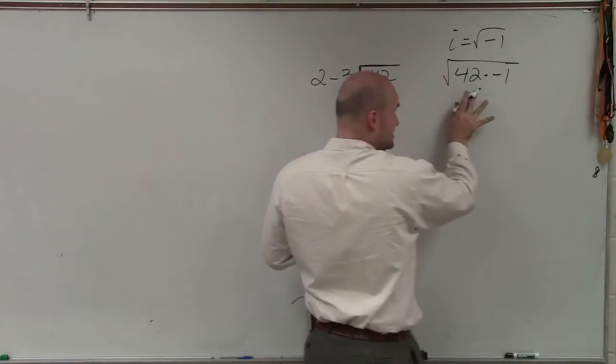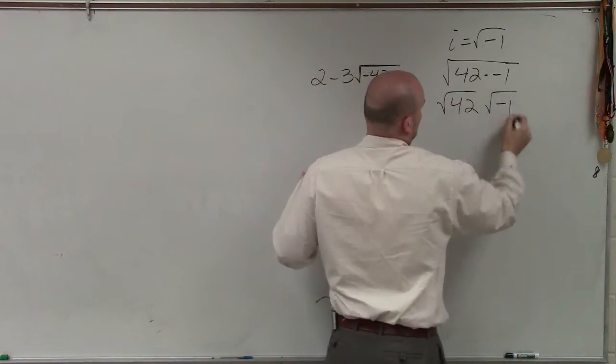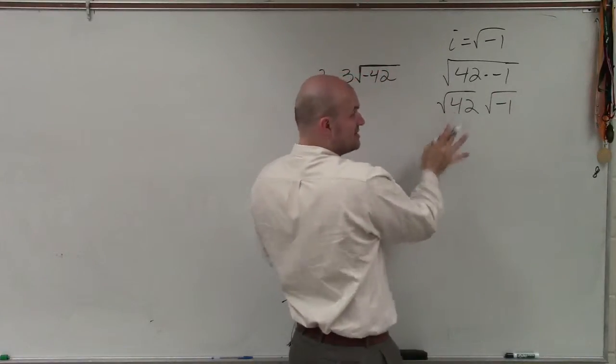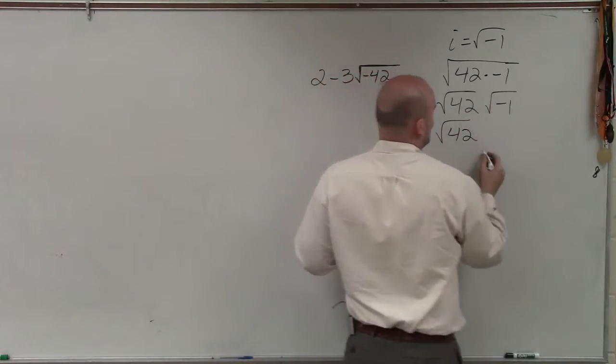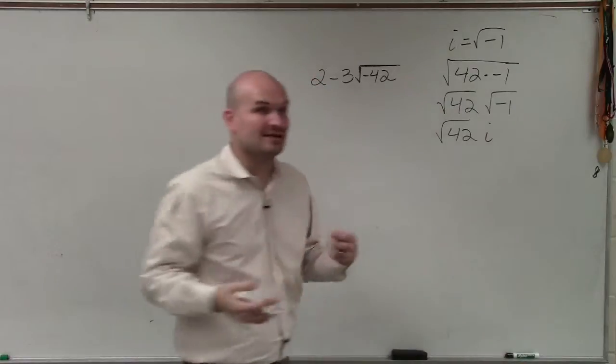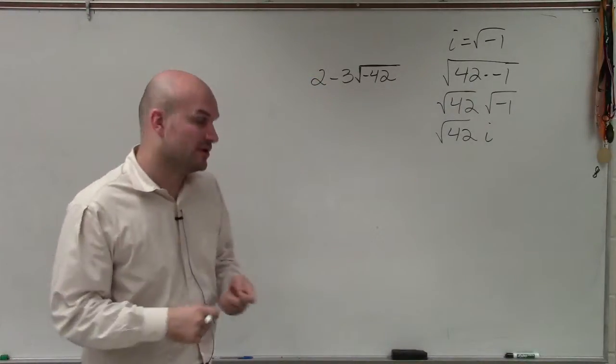By using my rules of exponents, I can break that up into two separate roots, where the square root of 42 I'm going to simplify, but now the square root of negative 1 is just i. So now I've rewritten it, but I can still simplify this further by simplifying the square root of 42.